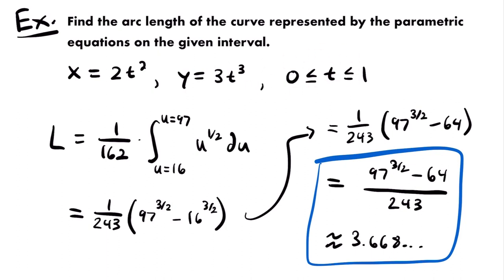That's the process of finding the arc length of parametric curves. All you have to remember is the formula and how to find the derivative of each parametric equation. This was the last example for this lesson. If you want to see more examples, check out the examples video linked at the end of this video and in the description below. If you have any questions, feel free to leave those in the comments.